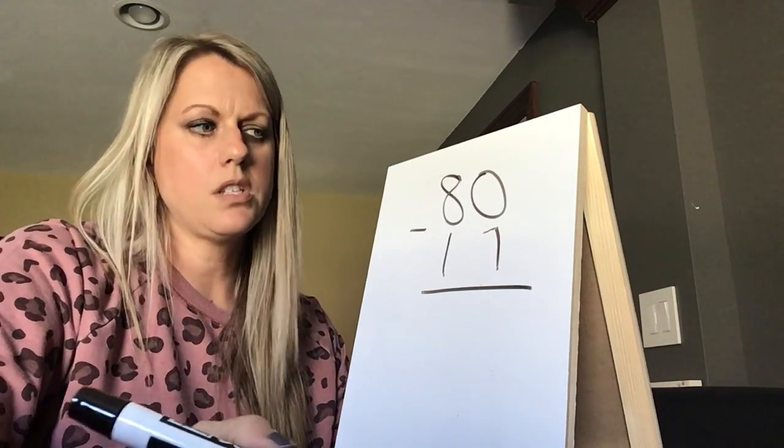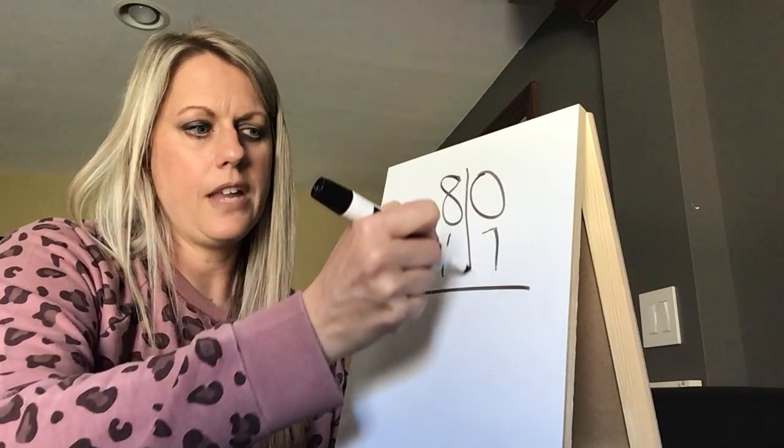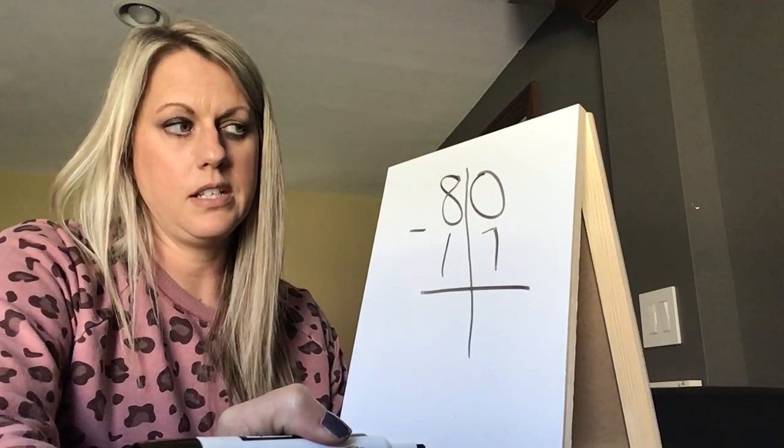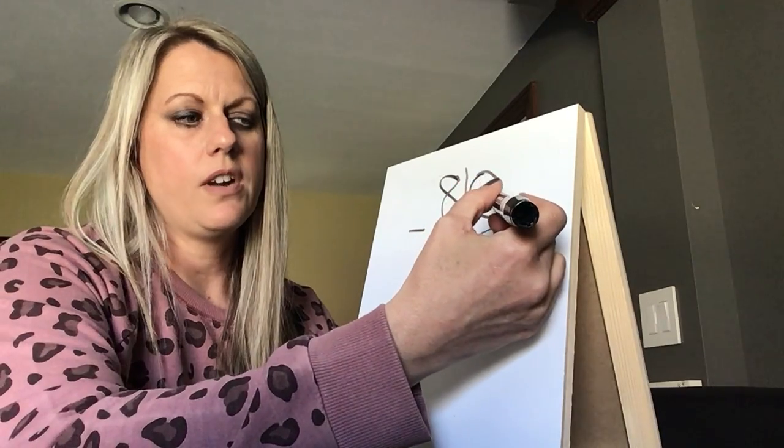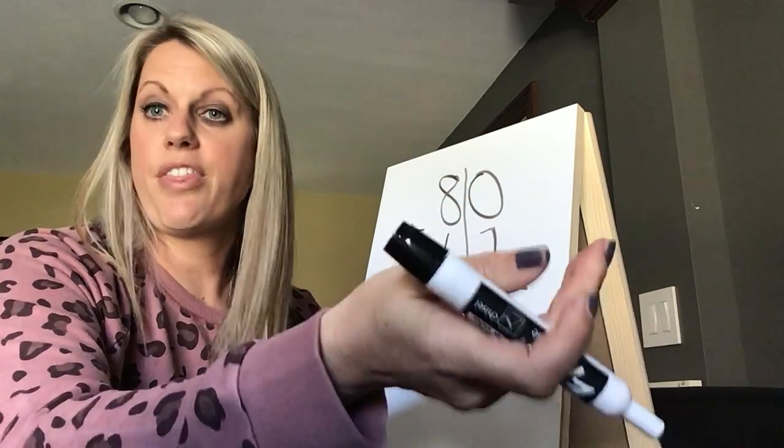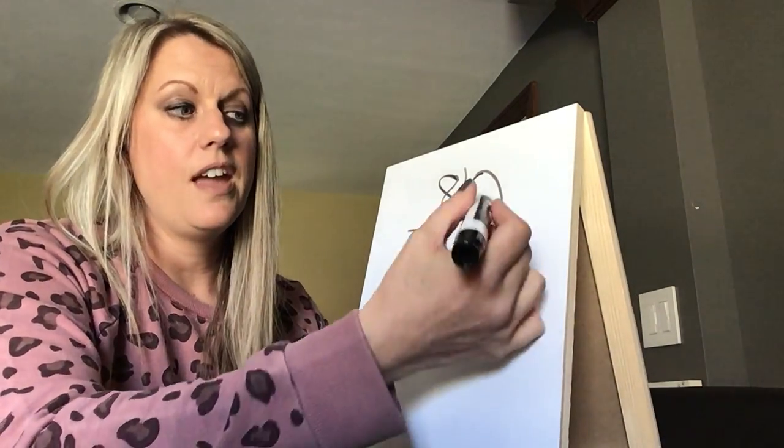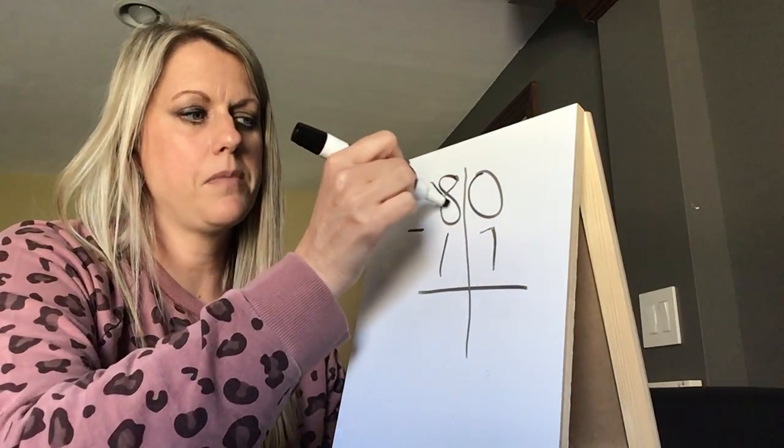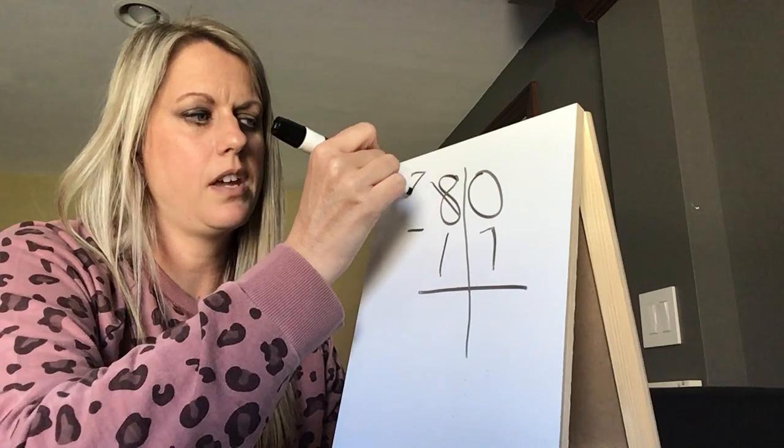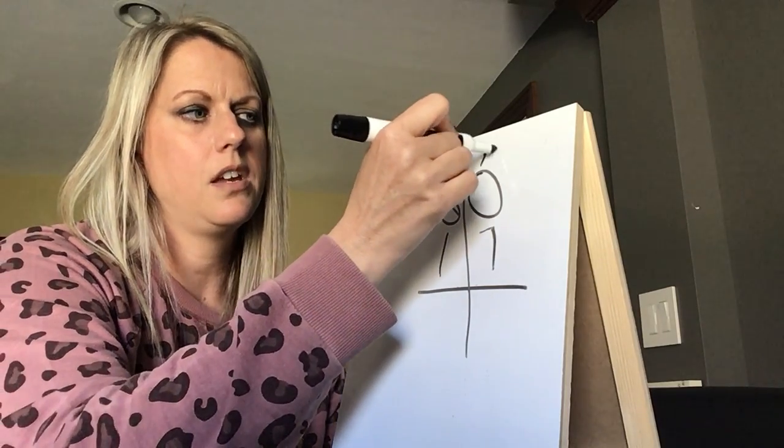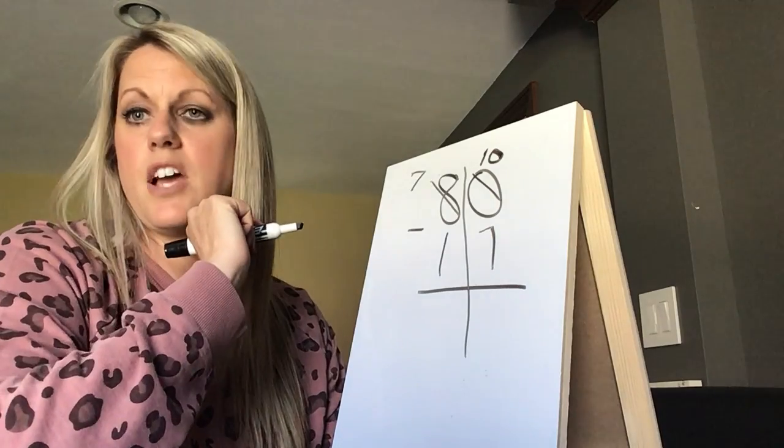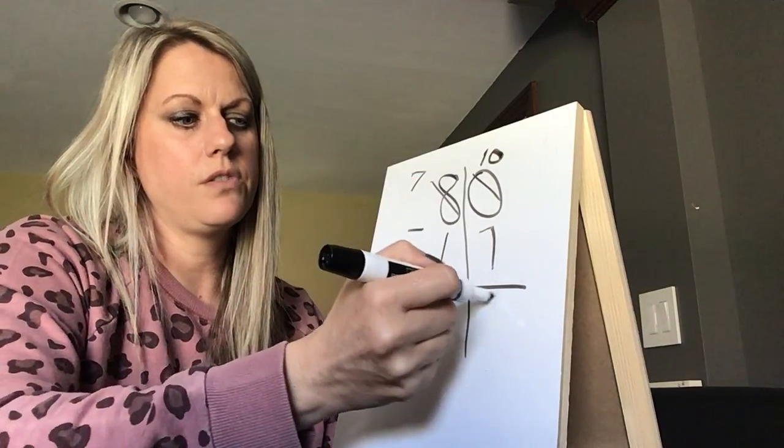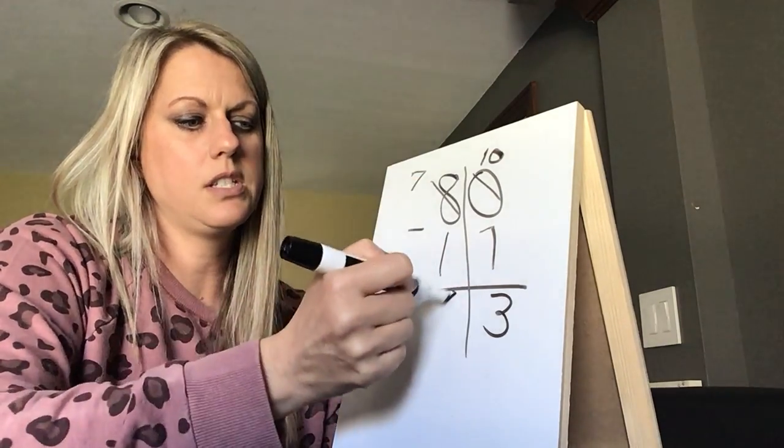If we start in the ones column—sometimes I like to put a little line there just to separate my work and keep it nice and neat. If I have zero and I try to take away seven, we already know if I have nothing, I can't take away seven and there's more on the floor. So I have to go next door and grab 10 more. This is going to become a seven because I'm going to grab a 10 away from there, and I'm going to make this a 10. So 10 take away seven is three, and seven take away one is six.